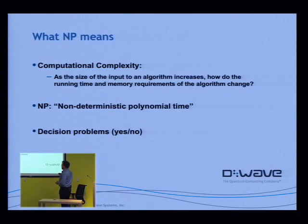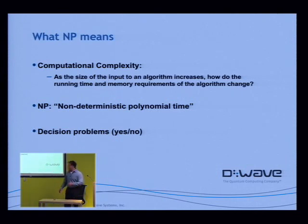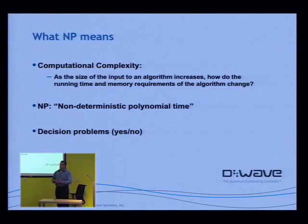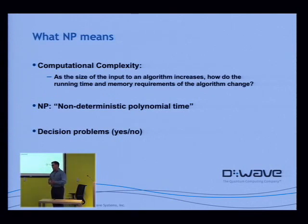The NP category means this: they're all decision problems — problems that resolve to a yes or no answer. As an example, I might ask: is there a path between San Francisco and Vancouver that costs me less than five dollars if I'm flying on a plane? That's a question with a yes/no answer, and in order to answer it, it might be trivial or it might be very hard if you have to search through many different possible instances.